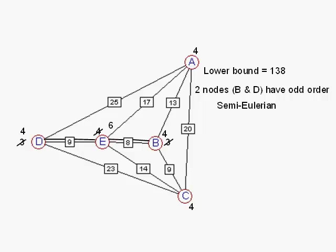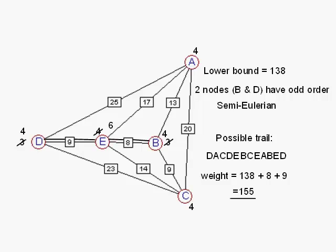That makes all of the nodes of even order, and so we now have a Eulerian network and we can start and finish anywhere we like. Let's do it with D and find a possible trail starting and ending at D. Notice that D must appear three times because it's of order four and it's the start and finish. A, C, and B now have order four, so they must appear twice in our list. But E has to appear three times because we have to visit and leave it three times to cover all the possible arcs. The total weight is now 138 plus 8 plus 9, which is 155. So that's the smallest distance we can do a route inspection of that network.